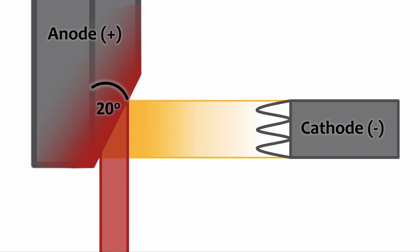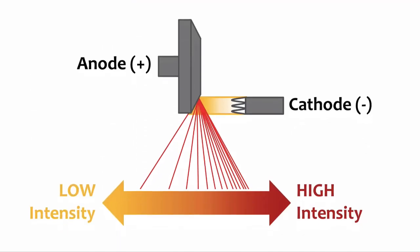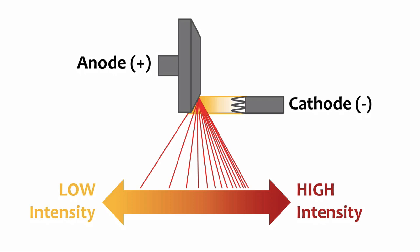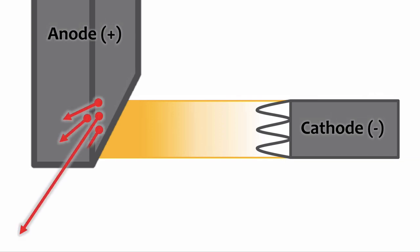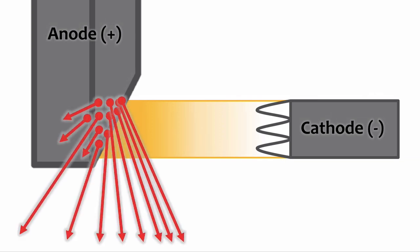Unfortunately, the angled anode does have one negative consequence. The angle of the anode causes a variation of the beam's intensity across the x-ray field. Specifically, there are fewer x-ray photons on the anode side of the beam compared to the cathode side, so the cathode side has the higher intensity and the anode side has the lower intensity. This happens because x-ray photons are created throughout the anode, and some photons created deep in the anode get absorbed within the anode heel. As a result, the x-ray beam has fewer photons on the anode side — that's the definition of the anode heel effect: decreased x-ray beam intensity on the anode side of the beam.